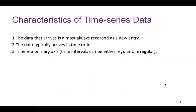There are three main characteristics of time series data. The first being that the data almost always arrives recorded as a new entry. Second, the data typically arrives in time order. And lastly, time is a primary axis. The time intervals can be either regular or irregular. Typically, time series are assumed to be generated at regular spaced intervals of time, and these are known as your regular time series.